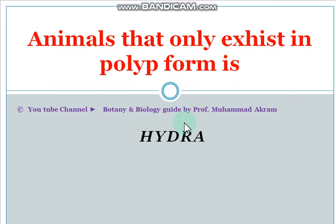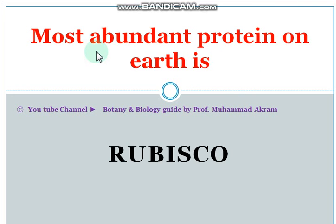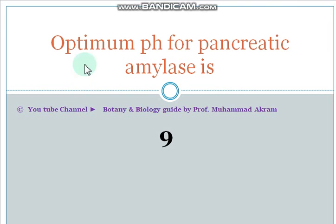Animals that only exist in polyp form: hydra. The most abundant protein on Earth is RuBisCO — Ribulose bisphosphate carboxylase. Optimum pH for pancreatic amylase is 9.